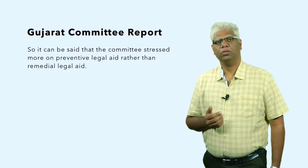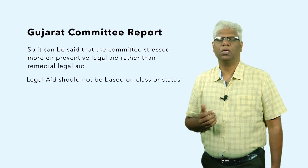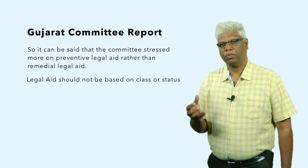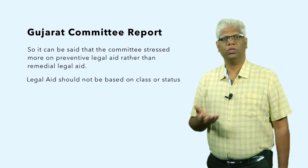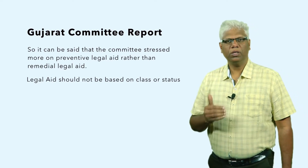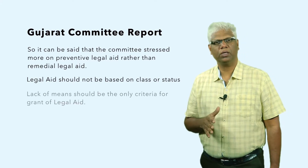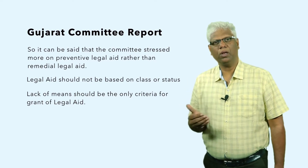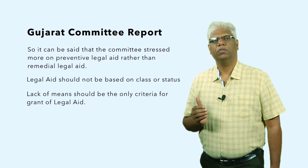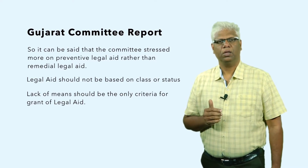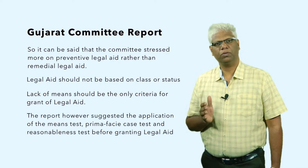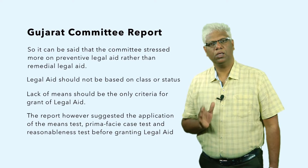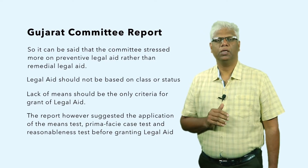The committee held that legal aid should not be based on class or status. Rather than granting legal aid automatically to a particular caste or class, we should look at the affordability of the person — the only test should be the means test. If a person is unable to hire a lawyer due to lack of financial resources, that should be a fit case for free legal aid. However, the report suggests that not only the means test, but also the prima facie test and the reasonable test must be applied before granting legal aid.